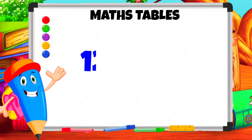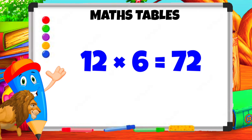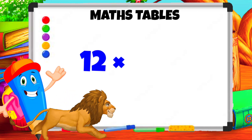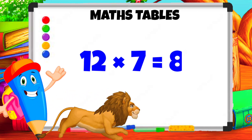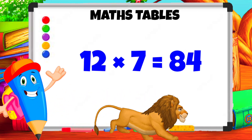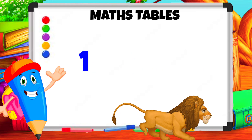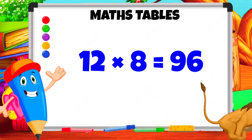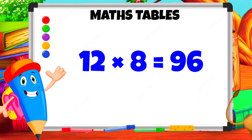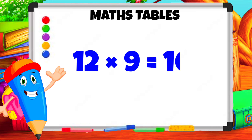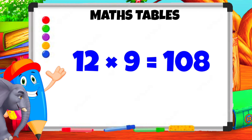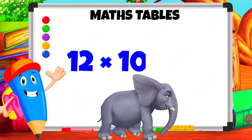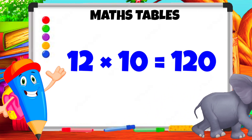12 6s are 72. 12 7s are 84. 12 8s are 96. 12 9s are 108. 12 10s are 120.